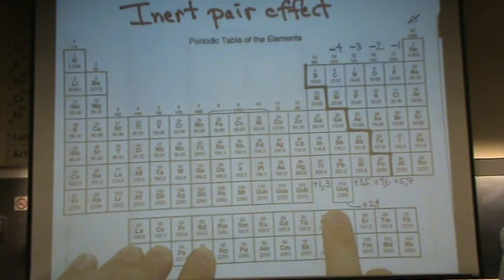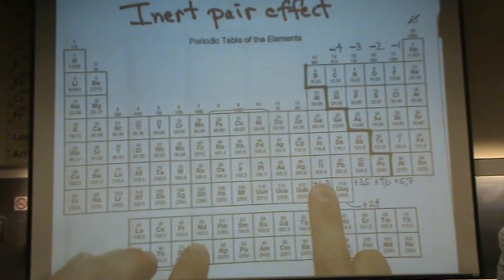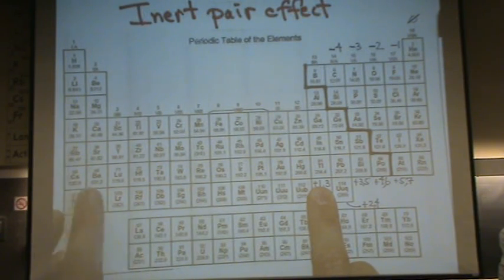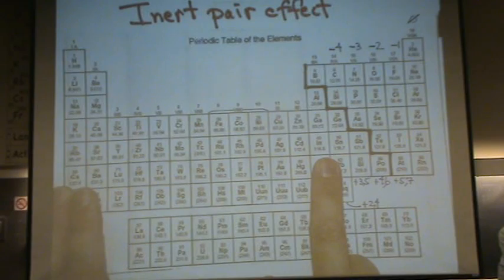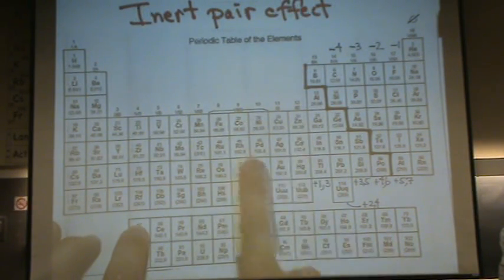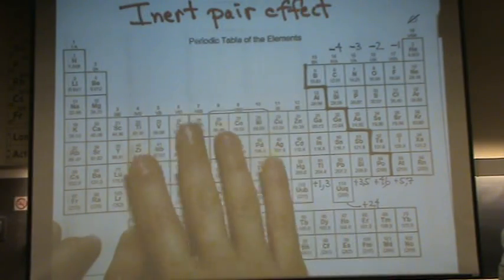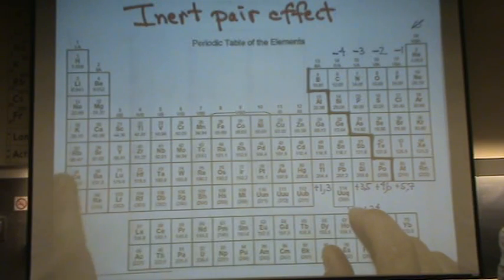However, according to the inert pair effect, you can keep the S electrons. So, for example, thallium here, or indium, or gallium can be plus one, two, three, or it can decide, I want to lose my P electrons and keep the S. So, it would be plus one. Going over to a configuration that's equal to a full d orbital configuration, where these act as what's called the inert pair.